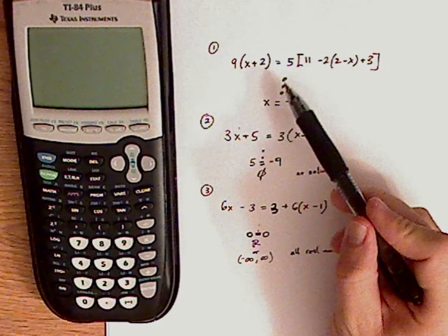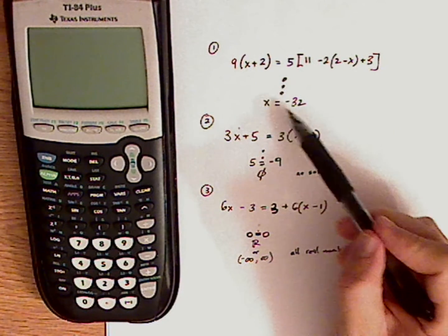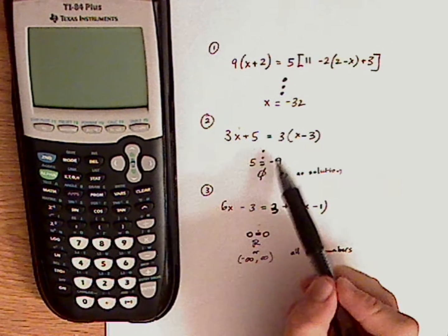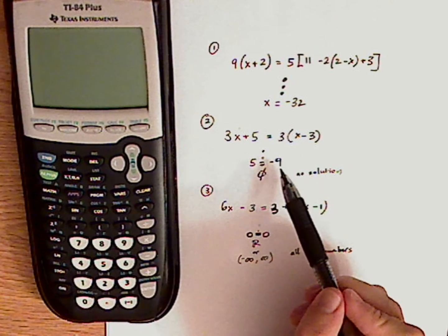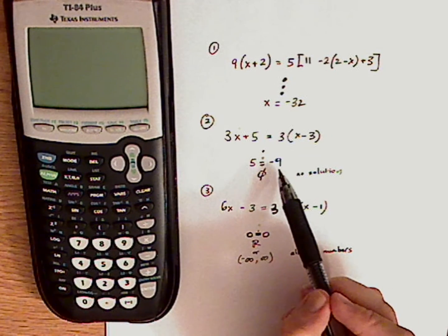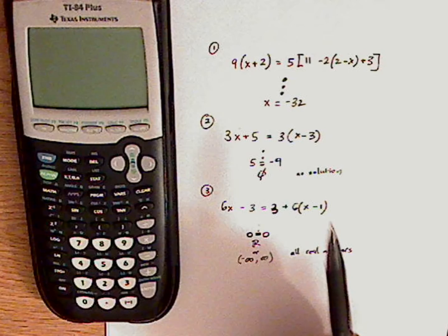You're going to have one type that is conditional, x equals negative 32 as an answer. This would be your second type which you get a contradiction. You find out that 5 equals negative 9. That doesn't make any sense so there's no solution.